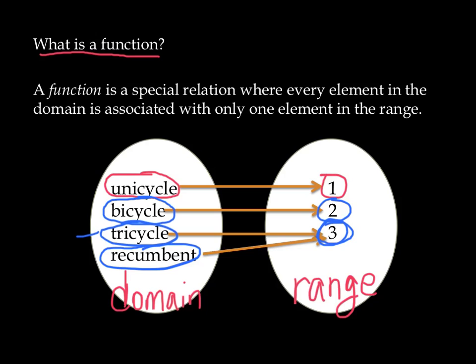Now, notice, just because tricycle and recumbent share the same result in the range, this is still a function. Because when I input a value of tricycle, the result is three, and when I input a value of recumbent, the result is three. In other words, the result is predictable.